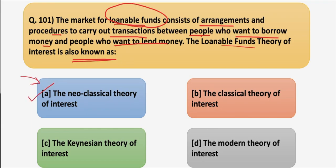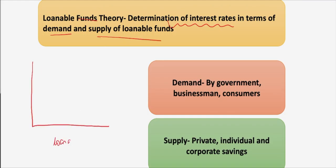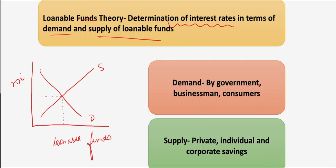We will compare the neoclassical theory, classical theory, Keynesian theory, and the modern theory of interest. The loanable funds theory determines interest in terms of demand and supply of loanable funds. The demand curve is downward sloping whereas the supply curve is upward sloping, and their intersection determines the rate of interest for a given level of loanable funds.